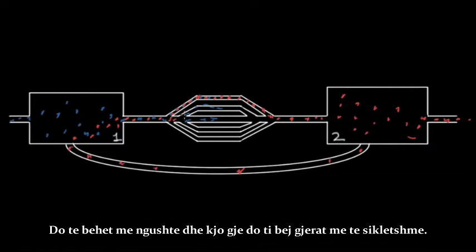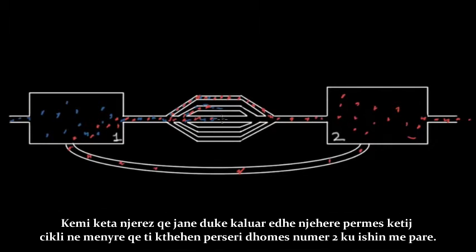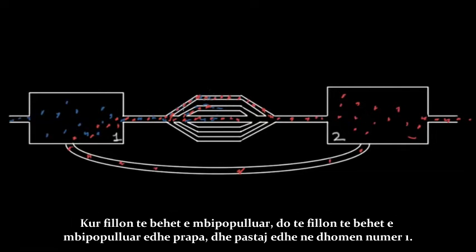It's gonna start to get a little congested in here — it's gonna get a little tight. That just makes things a little awkward, right? So you have these people coming through, going through this cycle, so that they can get back to room number two where they were before. And when they start getting congested in here, they're gonna start getting congested further back, and then even in room number one.